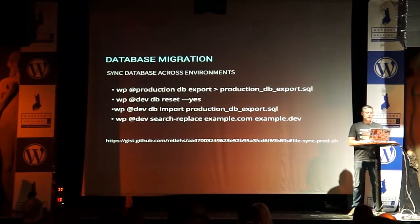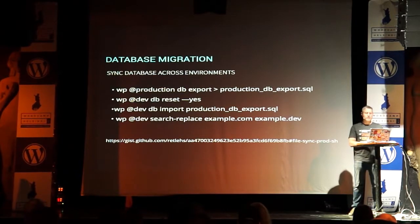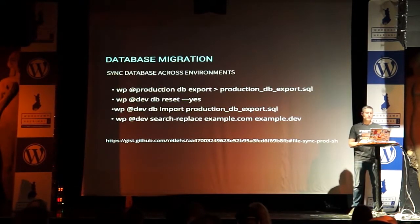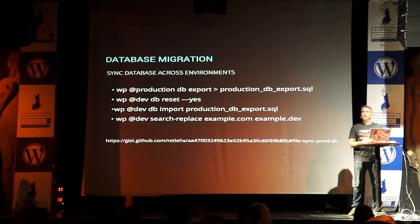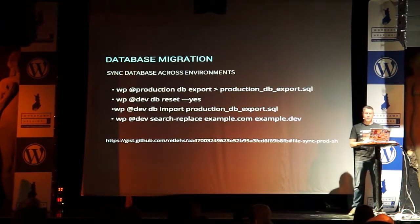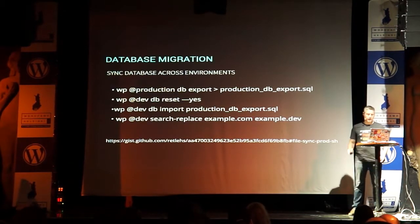For syncing the database across environments with WP-CLI, here's an example workflow: remote into the production environment and export the database, reset the database on dev, import that SQL export, then change the URLs. It's essentially going up to production, grabbing the SQL file, cleaning out the dev database, and importing the file — four commands, relatively simple. It's important to change those URLs because any URLs saved in your database will point to the live site and won't work on dev.